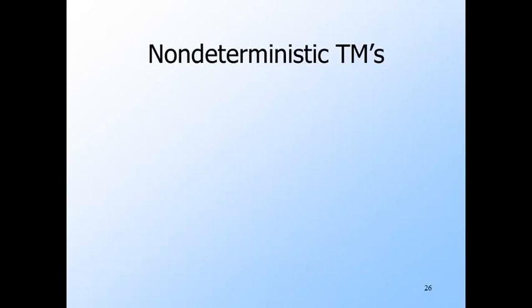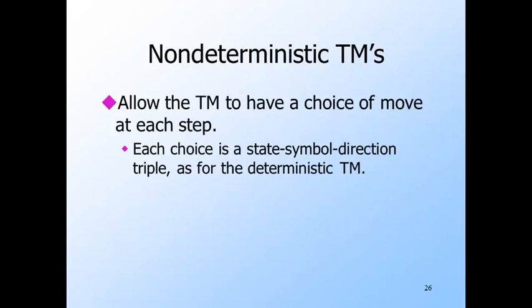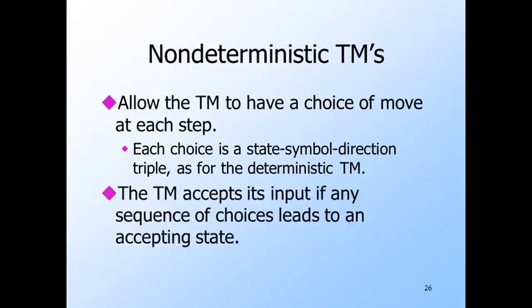Now let's look at the non-deterministic version of a Turing machine. We'll talk only about one-tape non-deterministic machines, but adding several tapes along with non-determinism doesn't add power either. The basic idea is that the Turing machine is allowed to have more than one choice of move for any state–tape-symbol pair. Once a choice is made, the next state, new symbol, and head direction are determined — you may have several choices in the non-deterministic Turing machine, but you can't pick a state from one, a symbol from another, and a direction from the third. As for non-deterministic finite automata and pushdown automata, the non-deterministic Turing machine accepts if any sequence of choices leads to an ID with an accepting state.